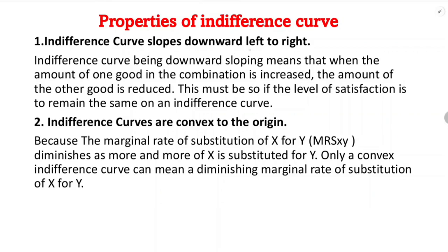This is the first property — there is an inverse relationship. The indifference curve is downward sloping, meaning that when the amount of one good in the combination is increased, the amount of the other good is reduced. This must be so if the level of satisfaction is to remain the same on an indifference curve.